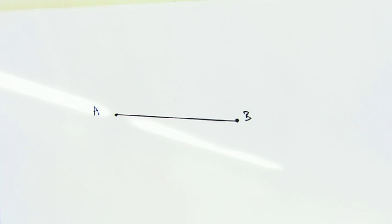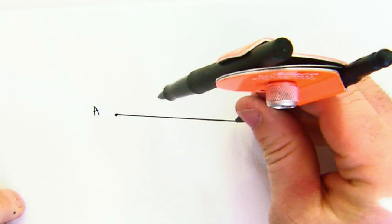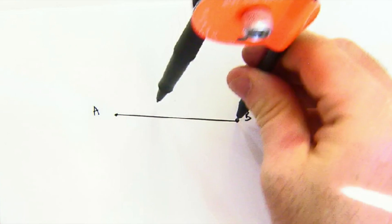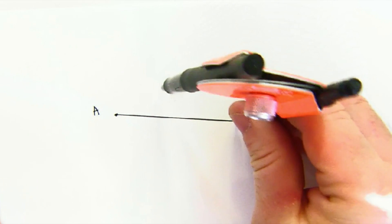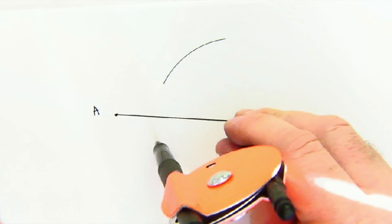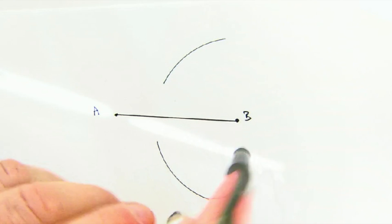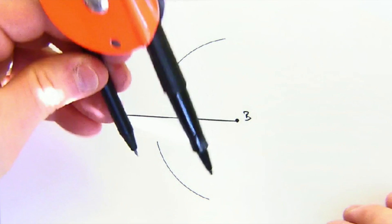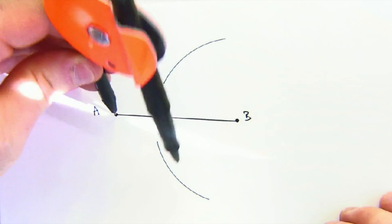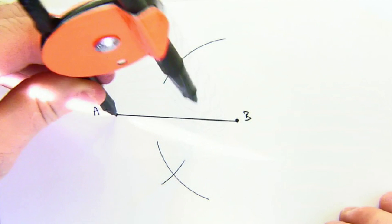And so what we do is we extend our compass beyond halfway and make an arc above and below our line. Leaving the compass length the same, we're going to move over to B, make a mark below and above.